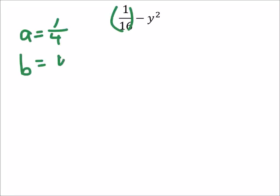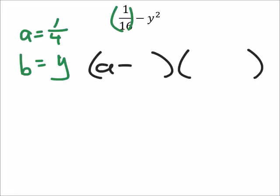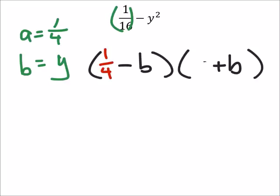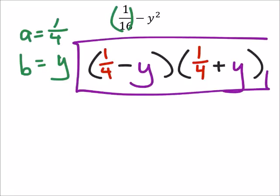The B here is just a Y. So we can replace those in the formula: A minus B, and then A plus B. So the A is 1/4th, so we'll replace those. And the B is Y. That's it.